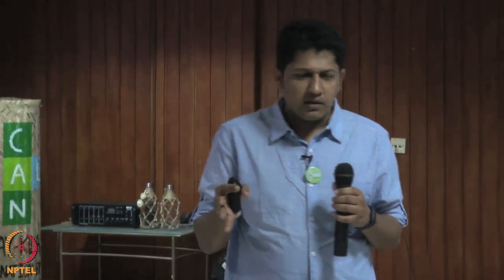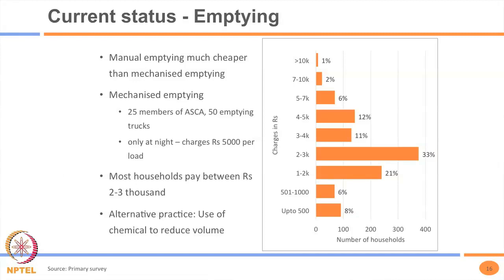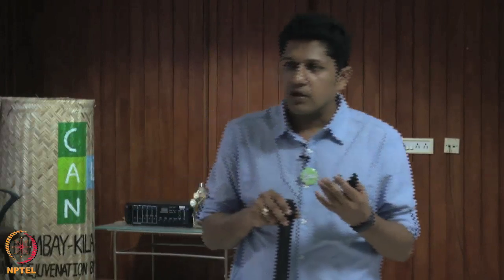Acknowledging that manual emptying exists is a little tricky because no government wants to admit the practice occurs in their city, given that there is a ban by law. There is also mechanized emptying provided by an association of septic tank emptiers, with about 25 members, a total of 50 trucks, each truck with a capacity of about 5,000 liters, and they operate only at night.